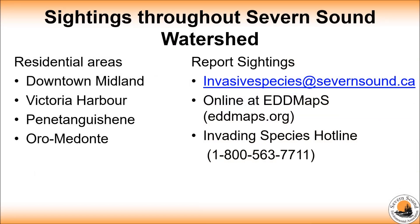Some of the sightings throughout the Severn Sound watershed include Downtown Midland, Victoria Harbour, Penetanguisine, and Oro Medonte. These aren't the only places where Norway maple can be found — it's just the only places that we have recorded them so far.